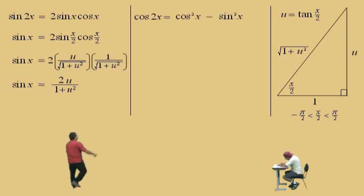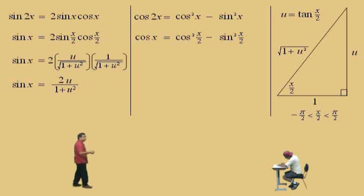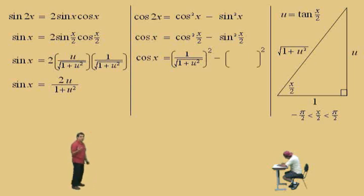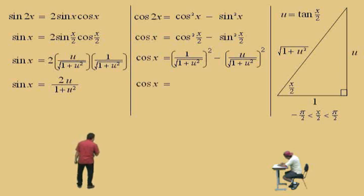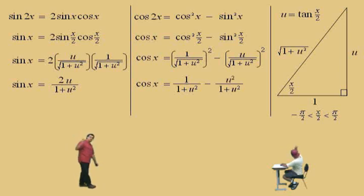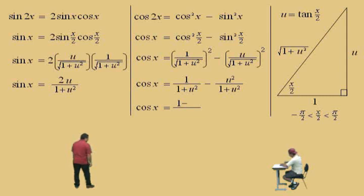Now for cosine. We use cosine x = cos²(x/2) − sin²(x/2). Squaring cosine of x/2 gives 1 over (1+u²), and squaring sine of x/2 gives u² over (1+u²). The denominators are the same, so subtracting: the numerator is 1 − u² and the denominator is 1+u². Therefore cosine x equals (1−u²) over (1+u²).